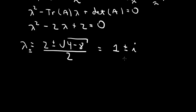This is the case of complex conjugate eigenvalues. The eigenvalues show up in complex conjugate pairs, and the eigenvectors also show up in complex conjugate pairs. So we need to find just one of the eigenvectors.